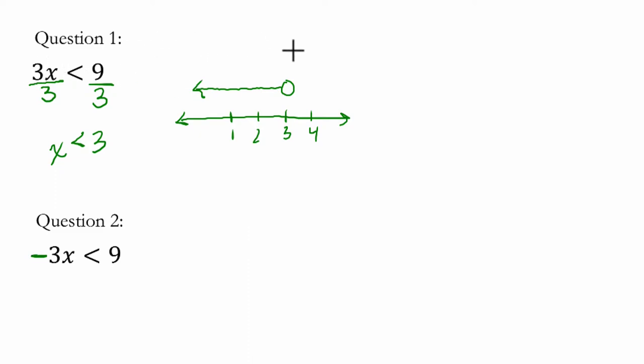So for example, let's say we have 3 times x where x is 2. Well, that equals 6, and that is less than 9.